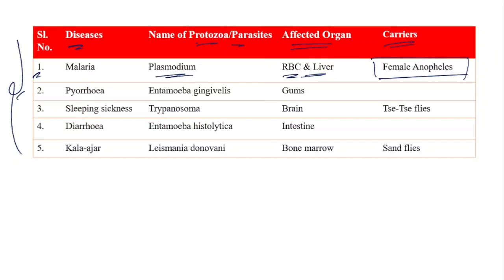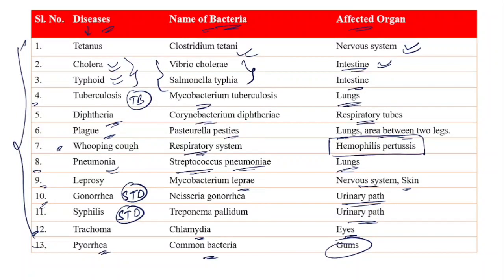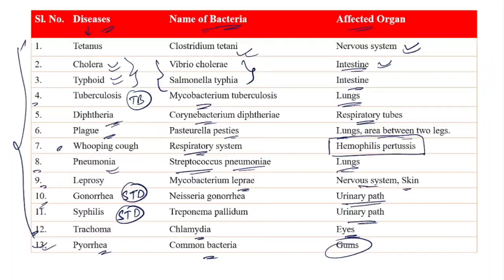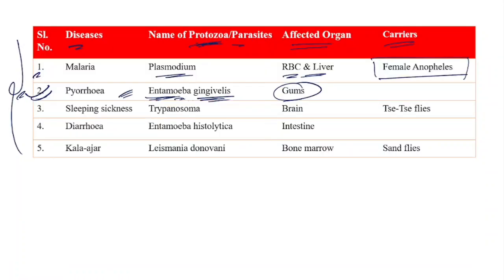The carrier for Malaria is the female Anopheles mosquito, which carries the malaria disease from one person to another. Number two: Pyorrhea — we have learned this as a bacterial disease, but it is also caused because of a protozoa called Entamoeba gingivalis. Entamoeba is a kind of protozoa that causes disease in the gums. If both bacteria and protozoa options are given, go for the protozoa — Entamoeba gingivalis.